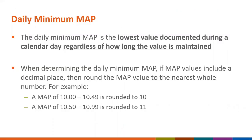For daily minimum MAP, you simply select the lowest MAP value for the day regardless of how long it was maintained — unlike FiO2, it does not have to be maintained for greater than one hour. When MAP values are reported to the decimal place, you round using standard rounding: values from 0.00 to 0.49 round down, and values from 0.50 to 0.99 round up. So any value from 10.00 to 10.49 rounds to 10, and 10.50 to 10.99 rounds to 11.